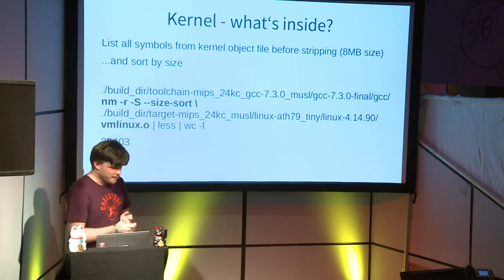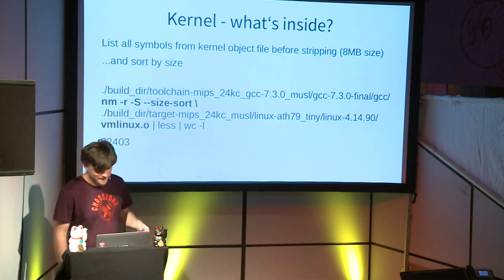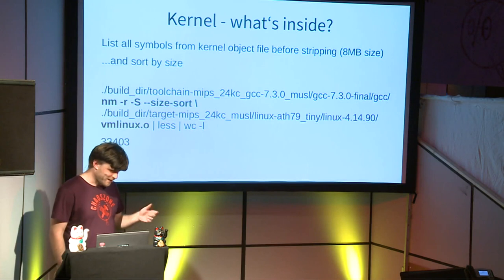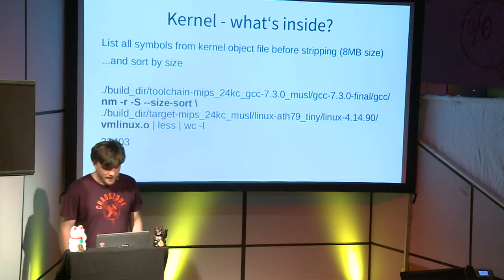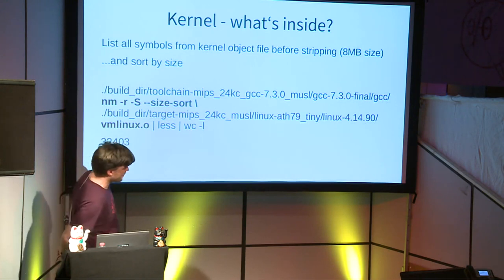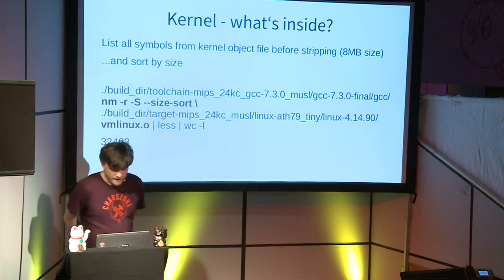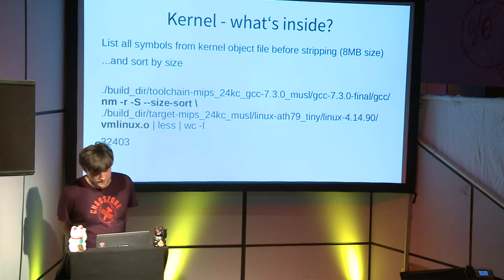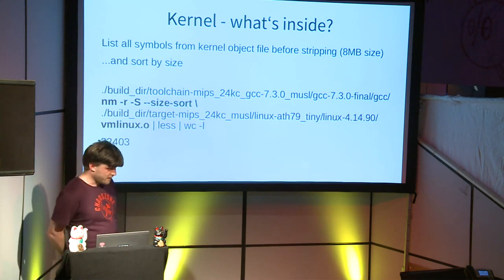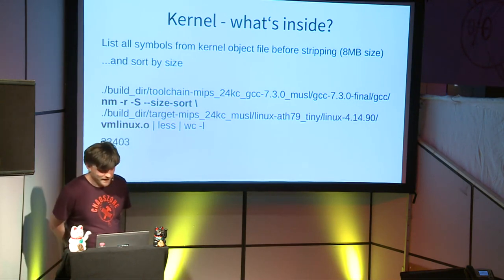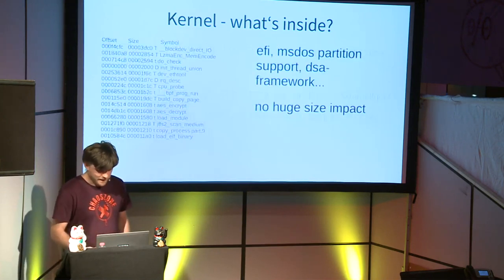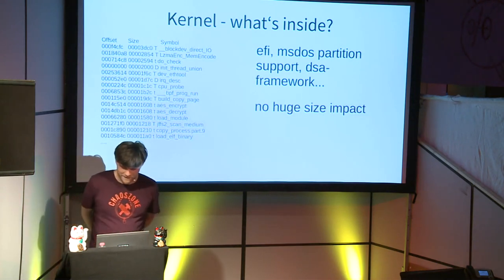When your firmware is too big and you want to find where you can free some space, you can look at the symbols inside the kernel. There's a tool called NM with an option to sort by size. You can see there are around 30,000 symbols inside the kernel — this is from the tiny target.